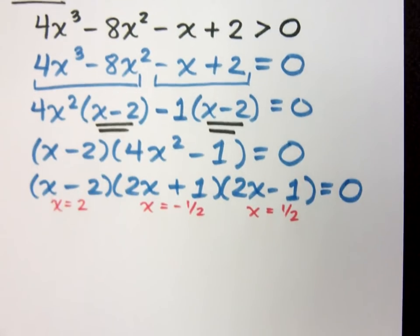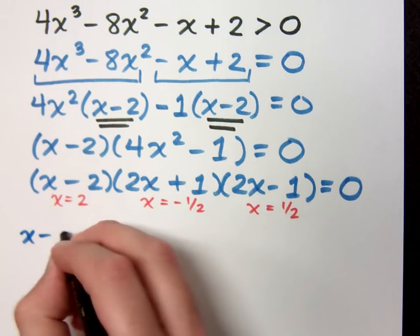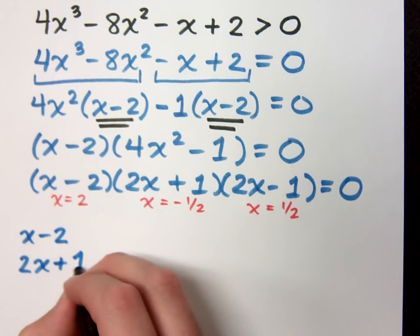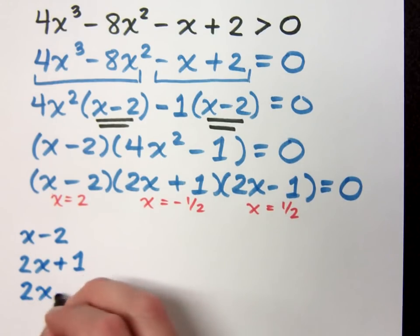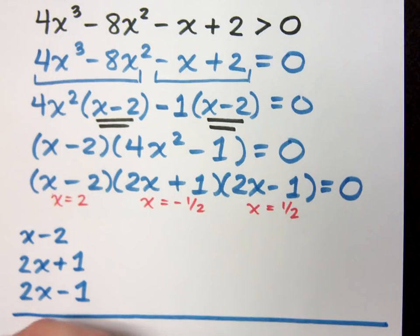Now when it comes time for doing the sign analysis, I have three factors I'm going to write down. I've got x minus 2, I have 2x plus 1, and I have 2x minus 1, but we have to see what happens whenever I put all of these factors together. Since these guys are all multiplied together, it shouldn't be too bad.